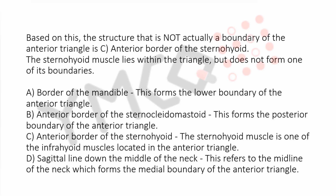B. Anterior border of the sternocleidomastoid — this forms the posterior boundary of the anterior triangle. C. Anterior border of the sternohyoid — the sternohyoid muscle is one of the infrahyoid muscles located within the anterior triangle. D. Sagittal line down the middle of the neck — this refers to the midline of the neck, which forms the medial boundary of the anterior triangle.